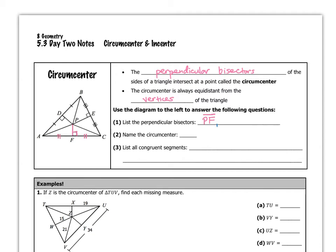The same is true of segment PD — it intersects side AB at a right angle, bisecting that side of the triangle. And then finally, segment PE does the same thing to side BC. So those are the three perpendicular bisectors.